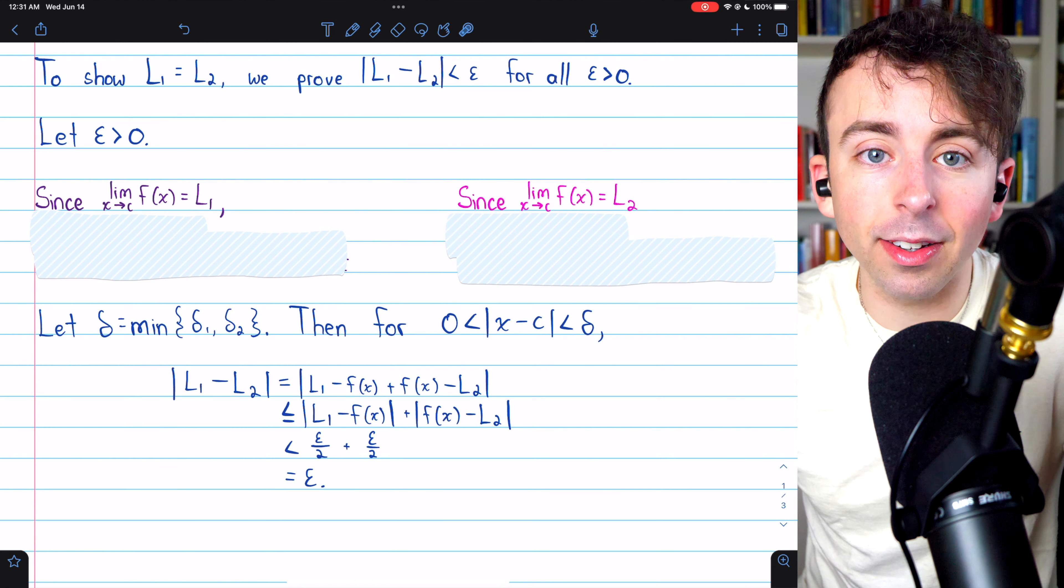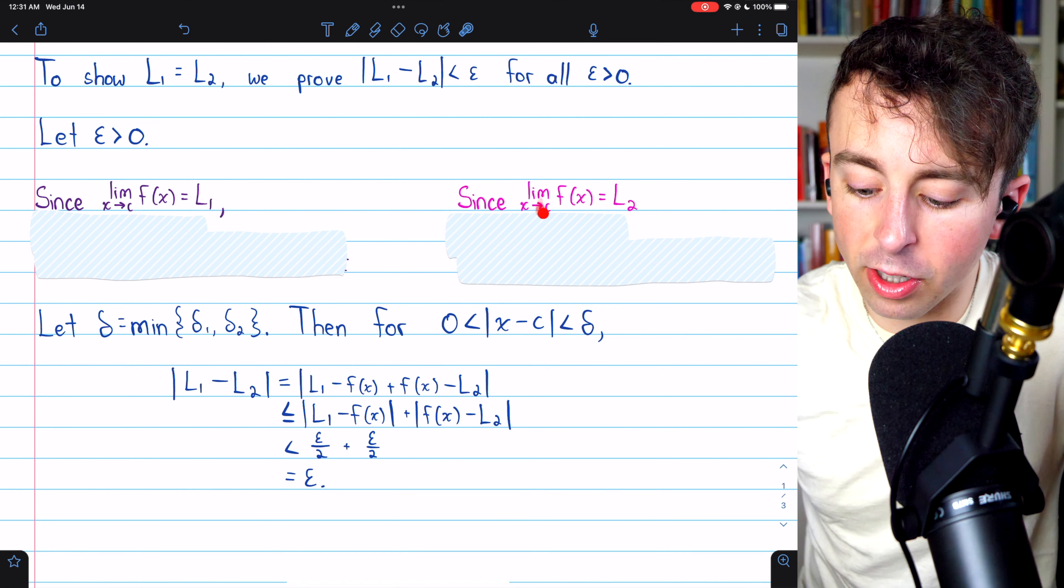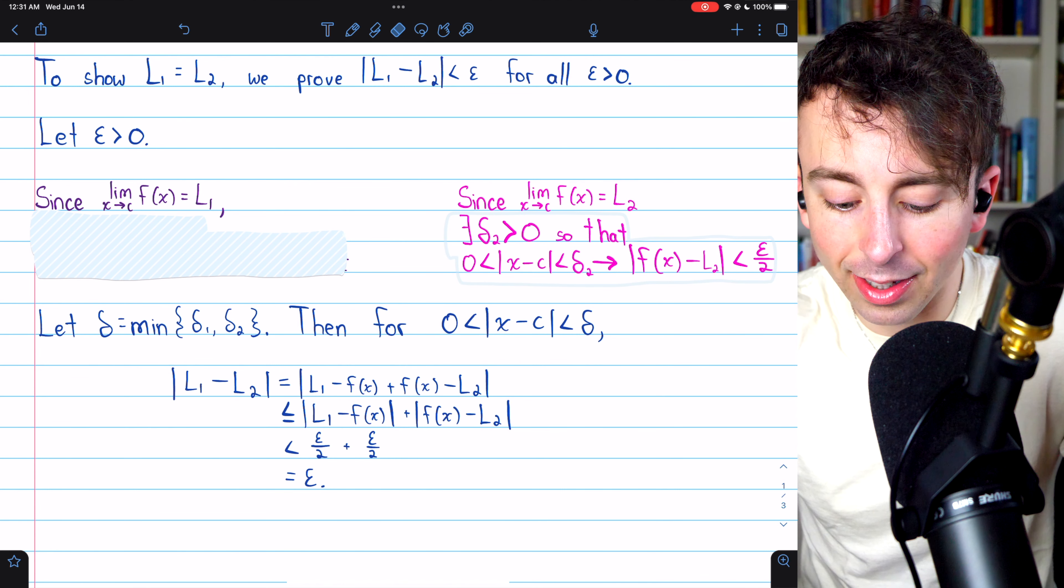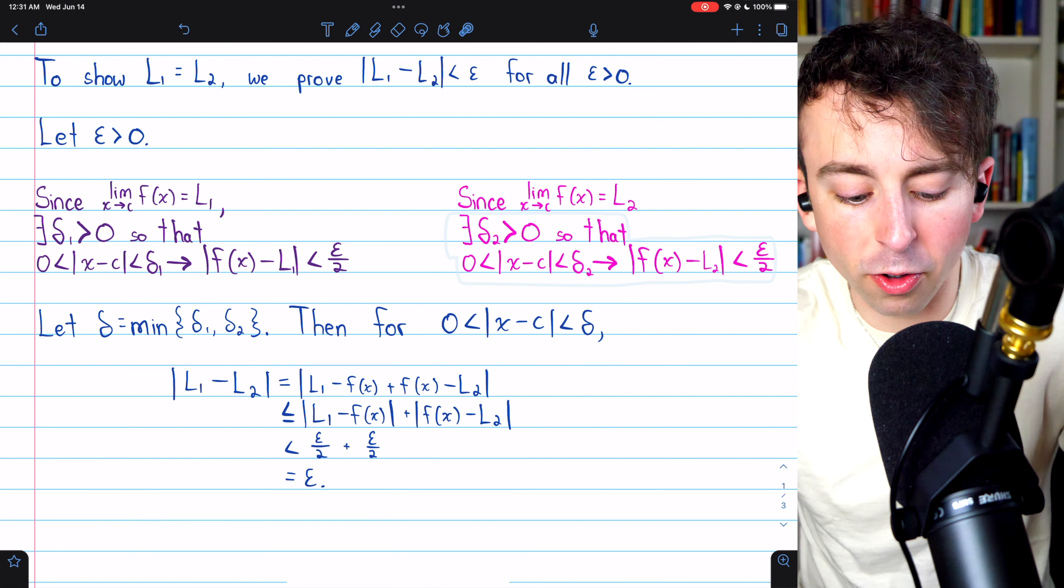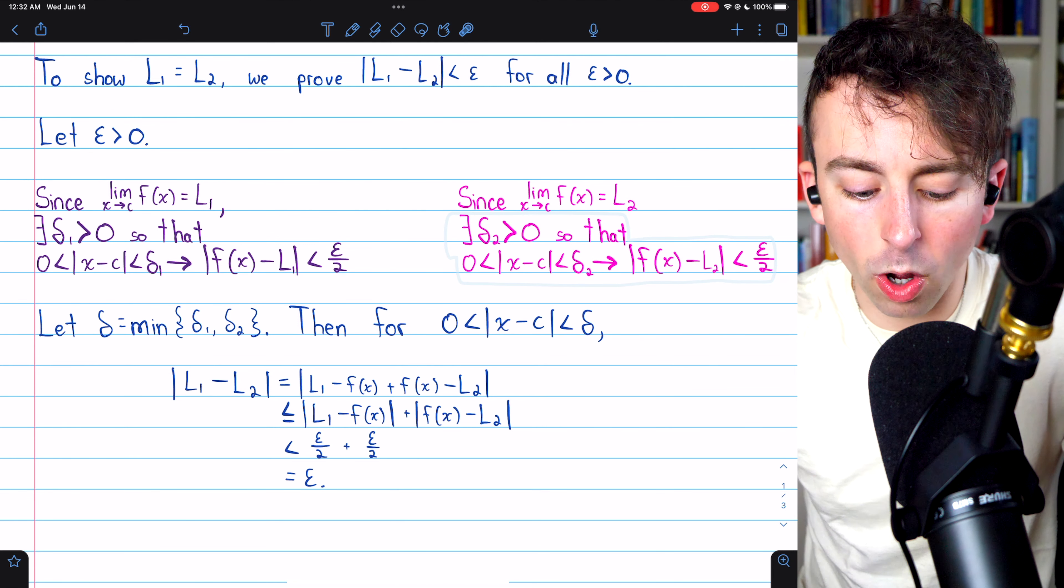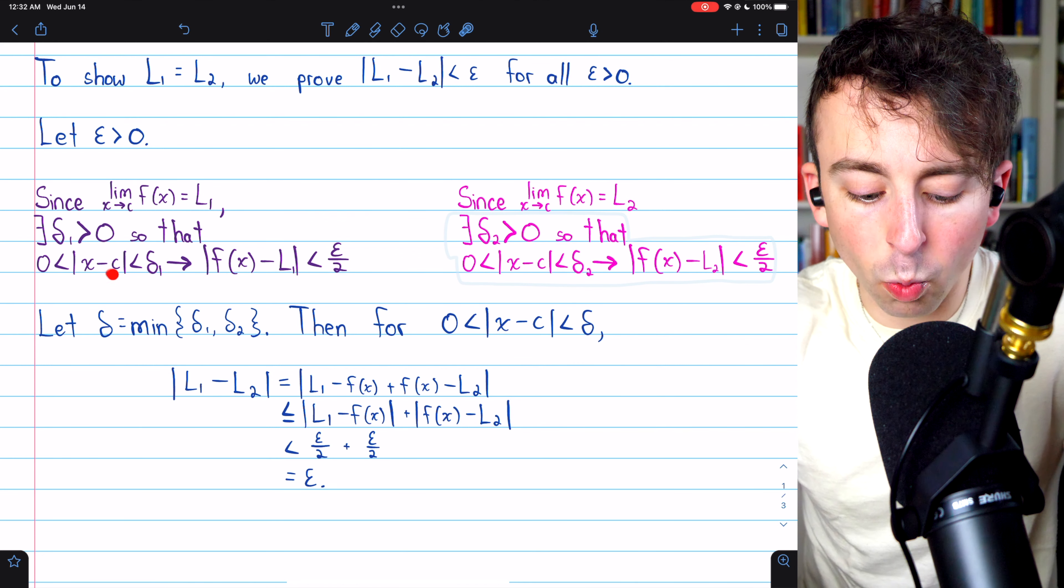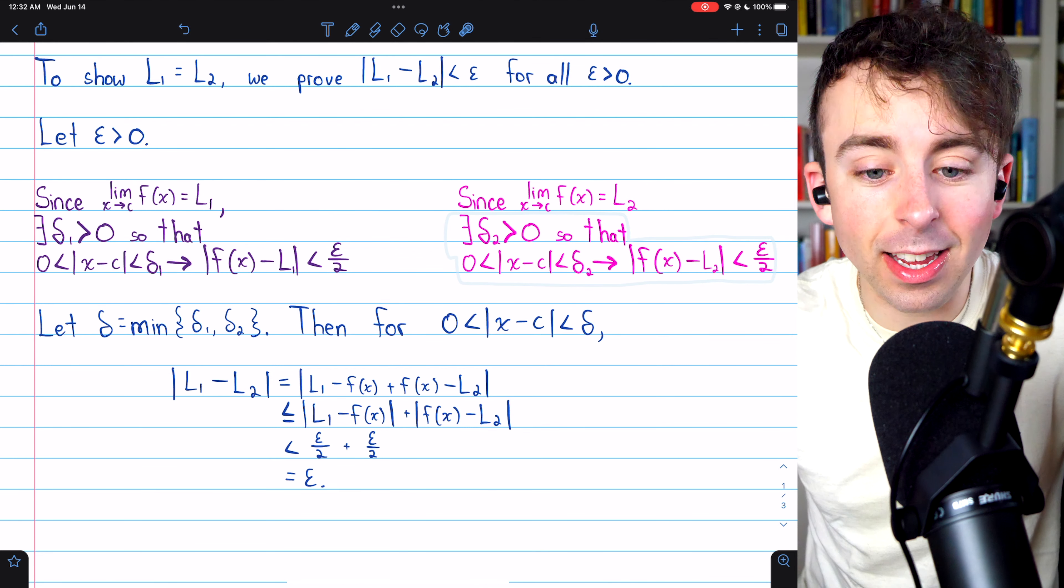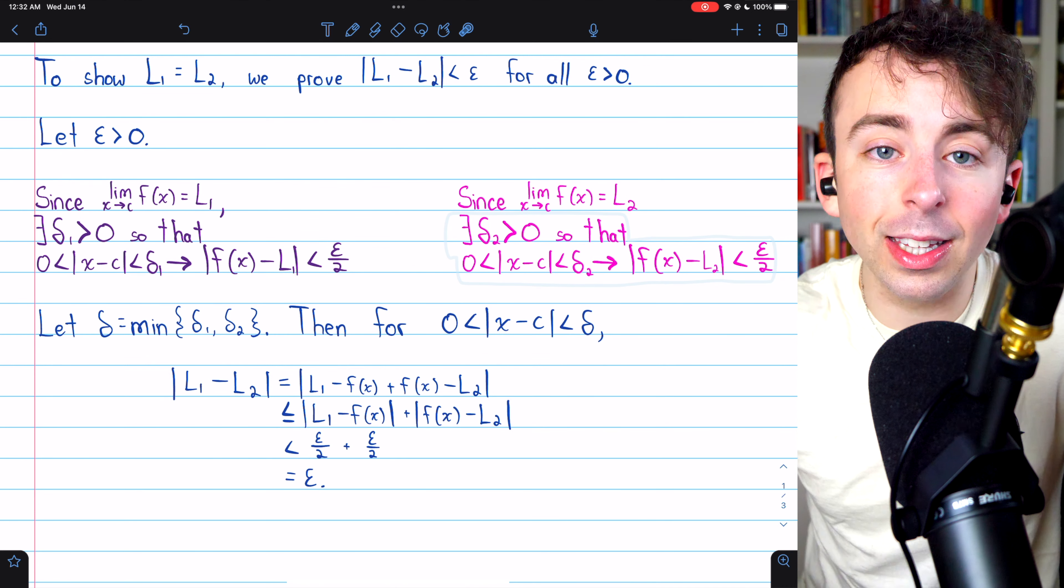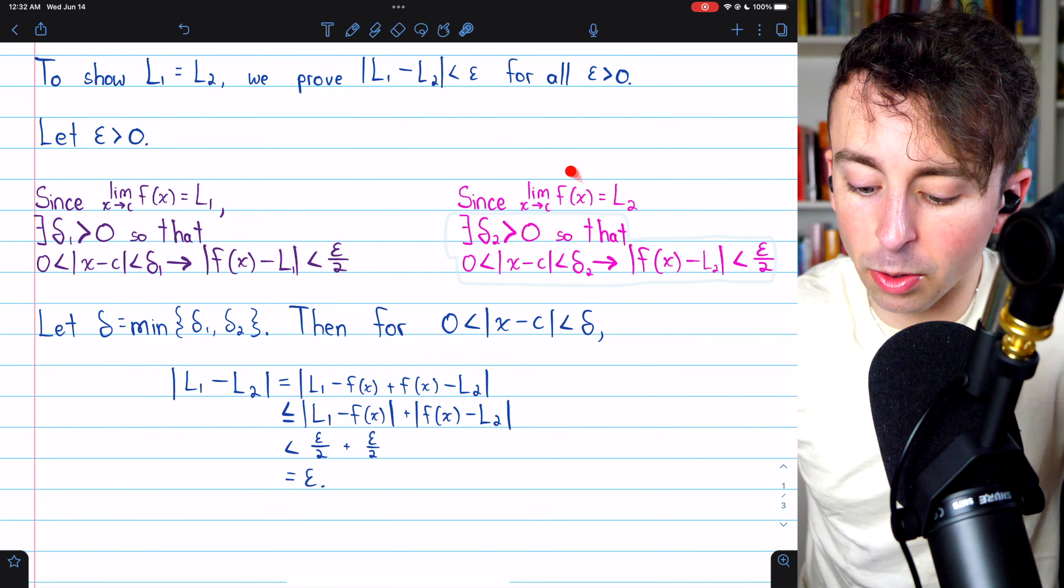Well, it comes back to f of X converging to a limit of L1 and f of X converging to a limit of L2, as X approaches C, of course. Applying the definition of the limit of a function, we know that there must exist this positive number delta 1, so that as long as X is within delta 1 of the limit point C, our function is within epsilon over 2 of the limit L1. That's by definition of a limit, this number must exist.